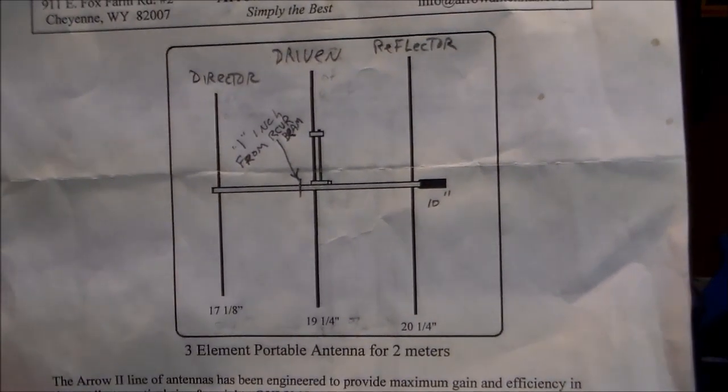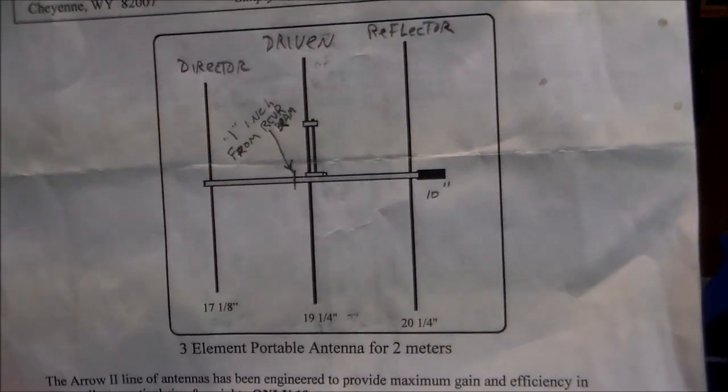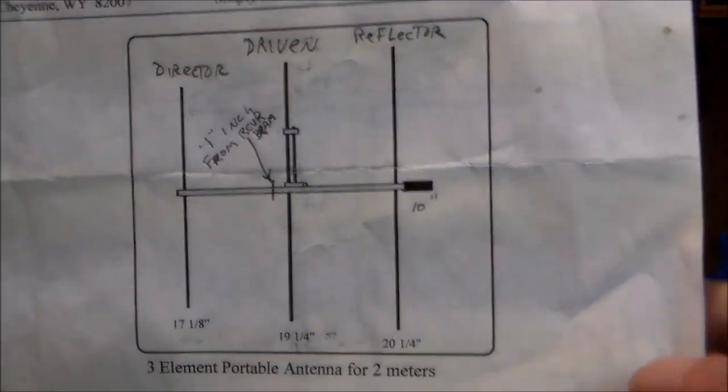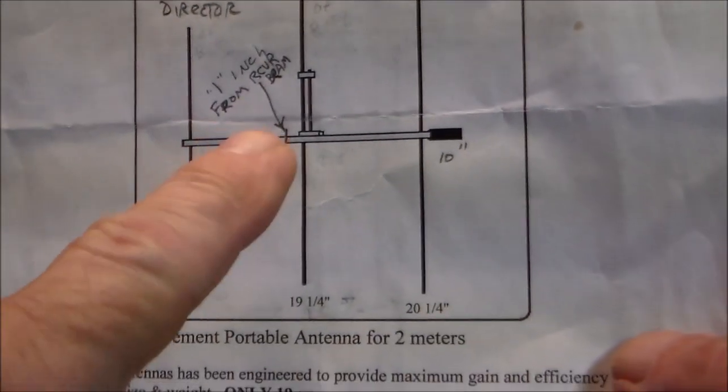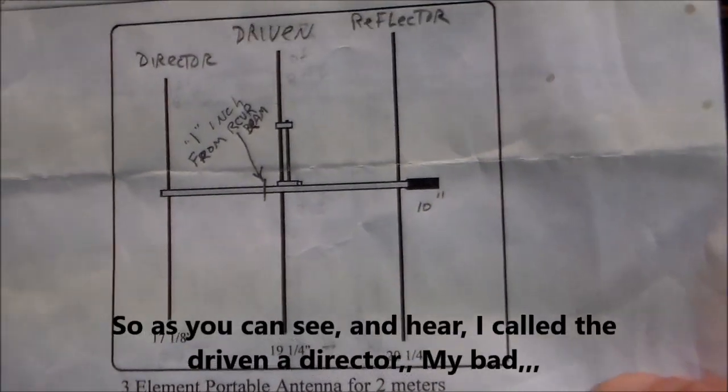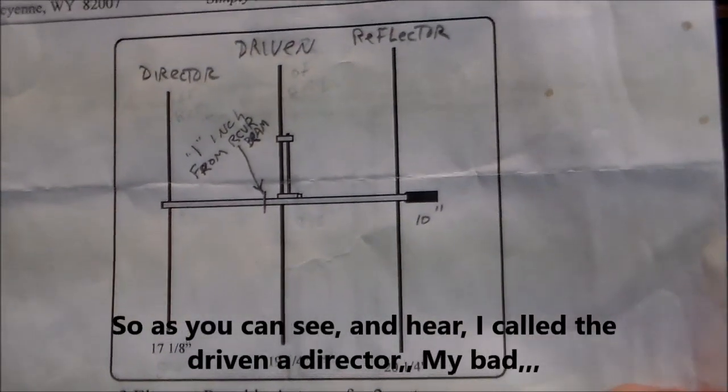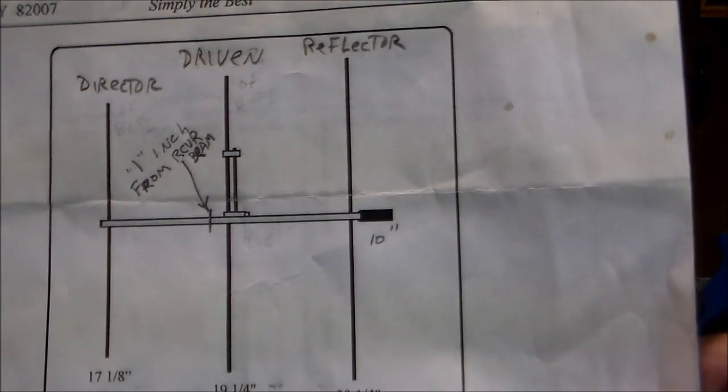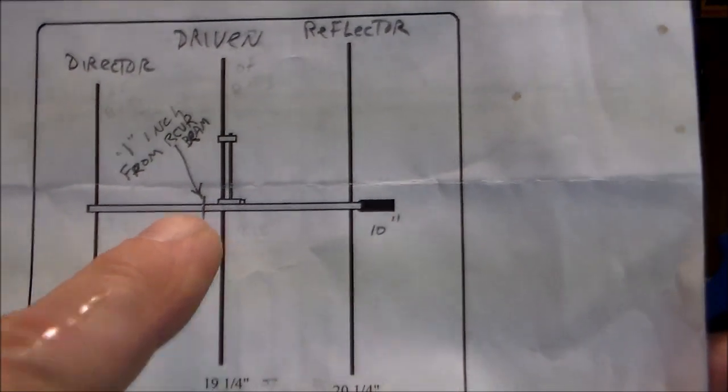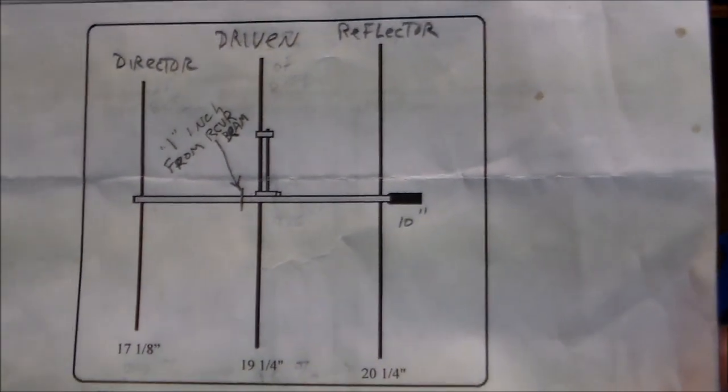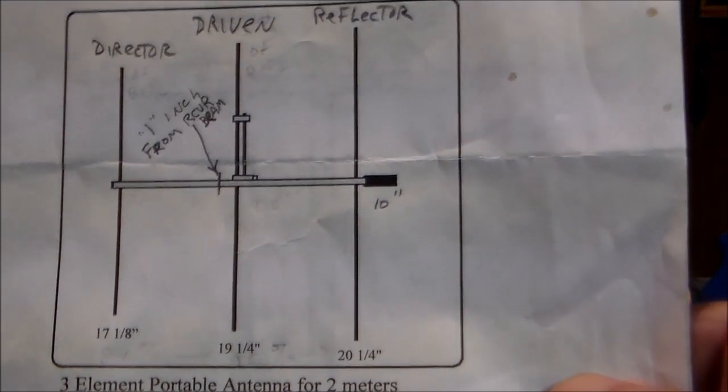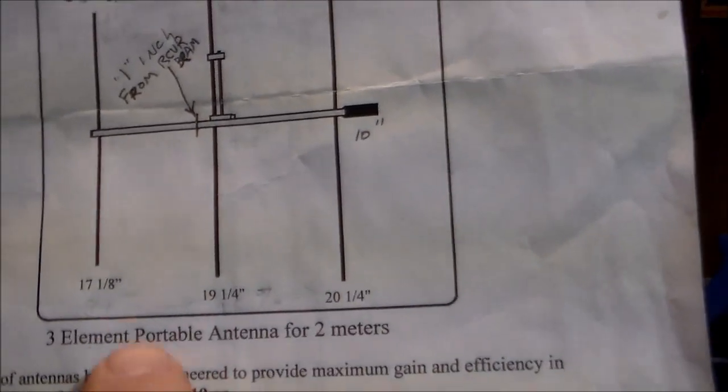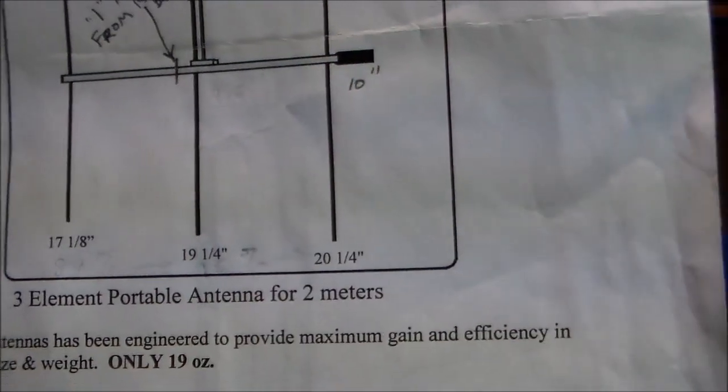Now there's the actual three element Yagi that you buy. You can see it's set for two meters. You have the director, the driven, and the reflector. Well, we're not worried about the director, the small short one, 17 and a quarter or an eighth. We are worried about the driven and the reflector. Those are the two we use for the two element Yagi. Plus, you can see it's one inch from the driven where you cut it off. So that's what we're about going to do right now. We're going to make the beam.